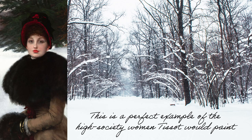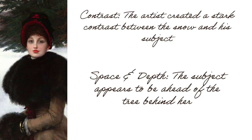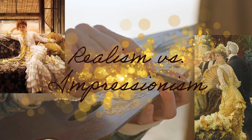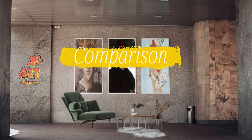This is a perfect example of the high society women Tissot painted. All the colors are cooler tones that represent winter. The woman in the painting has rosy cheeks and lips from the cold, and the snow is a symbol of purity and tranquility. The artist created a contrast between the snow and his subject, who appears ahead of the tree behind her. Tissot's paintings were mainly realism with hints of Impressionism, as you can see in his loose brushstrokes and attention to detail in the subject, with an Impressionist background.